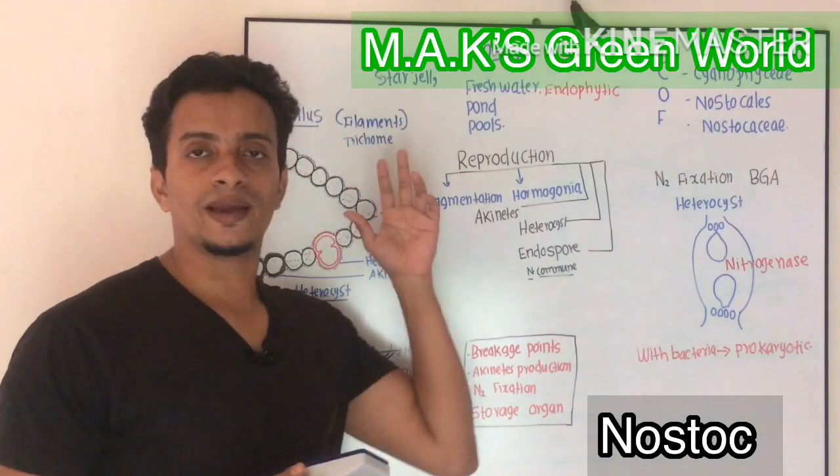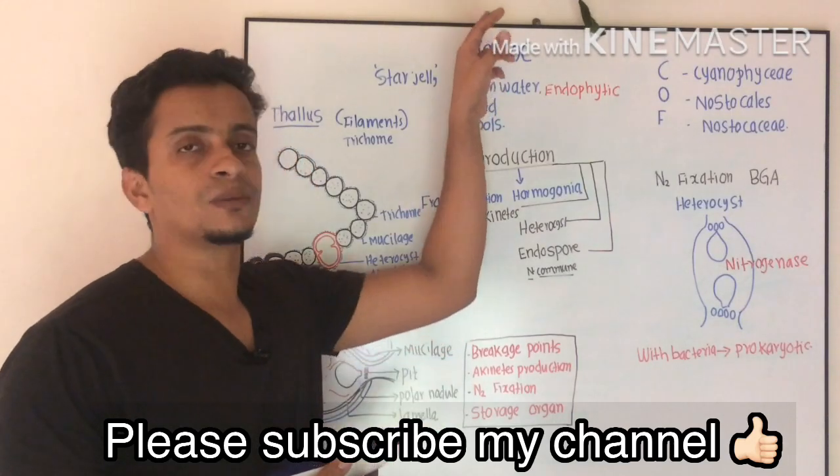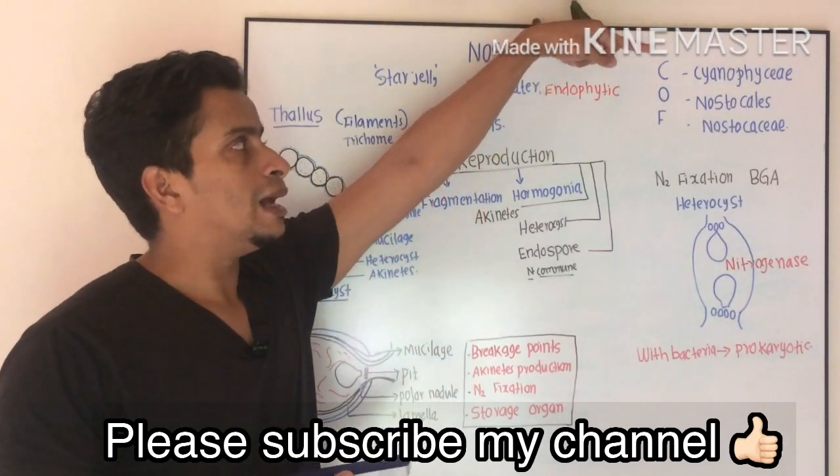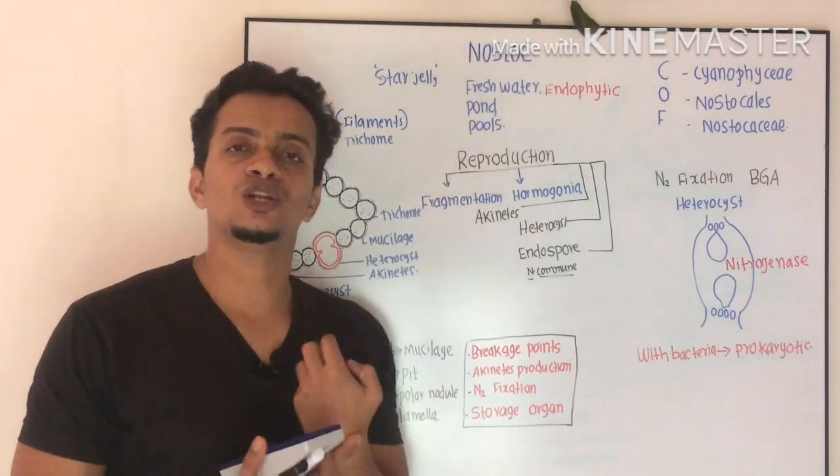Cyanobacteria in the phylum is Nostoc. Coming to the systematic position of Nostoc, it is under Cyanophyceae, order Nostocales, family Nostocaceae.